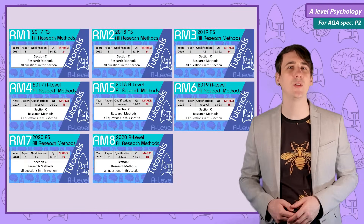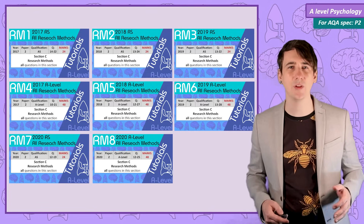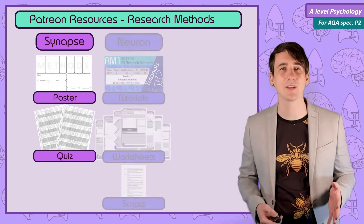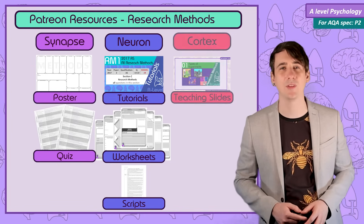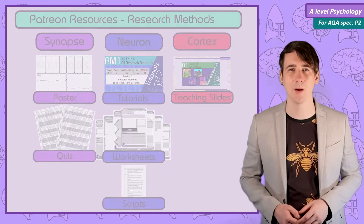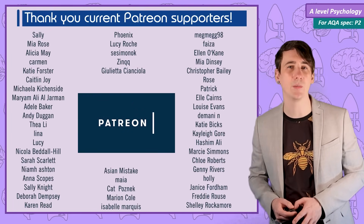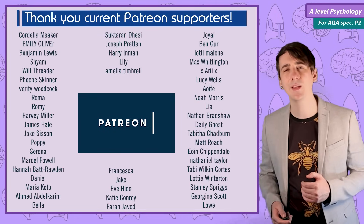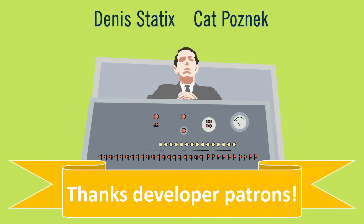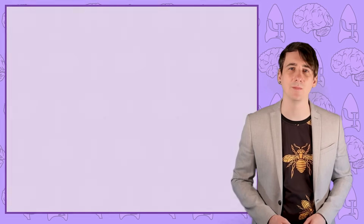There are 8 tutorial videos covering the AS and A level research methods sections from 2017 to 2020, with worked examples for every question and full exam tips. Patrons at the Neuron level and above can access these and many more hours of exam tutorial videos, as well as over 100 printable resources at psychboost.com. Thanks to all the students and teachers who have supported PsycheBoost on Patreon — their support allows me to teach part time and make PsycheBoost on YouTube for everyone. I'll see you all in the next research methods video.